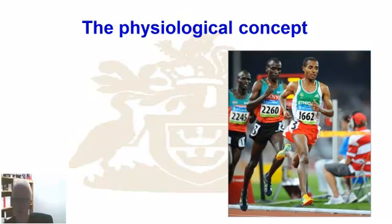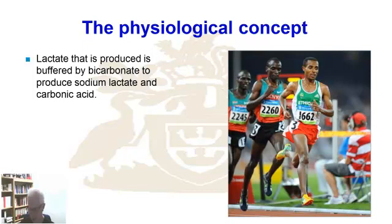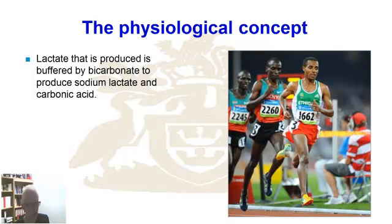Let's delve into the concept and understand why we see this response in terms of ventilatory mechanisms — why does VE show this response? If we go back to what's happening in the muscle, we recognise that lactate is being produced, and that in order to get lactate out of the cell, it has to come into contact primarily with bicarbonate. Bicarbonate is a natural buffer, and it creates a pH gradient between the intracellular and extracellular environments, so the cell will be more acidic than the extracellular environment. That allows the lactate to come out of the cell and to be buffered.